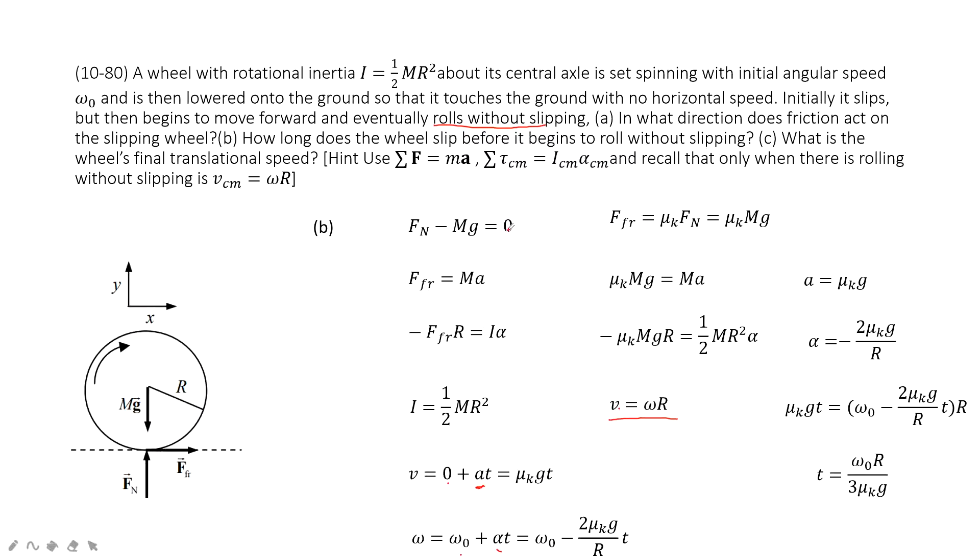How can we find the linear acceleration? Consider Newton's second law. At the y-component, normal force equals gravity. At the x-component, friction equals mass times acceleration. Friction is μ_k times N, so μ_k mg equals mass times acceleration.